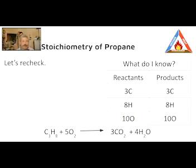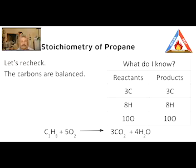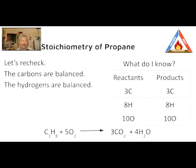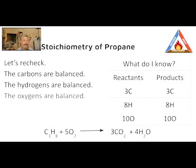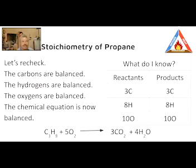Now let's just recheck our work. I have three carbons in propane on the reactant side. I have three carbon dioxide molecules, each containing one carbon, so I have three carbons on the product side — carbon atoms are balanced. On the reactant side I have eight hydrogen atoms from propane. I have two hydrogen atoms for every molecule of water, and there are four molecules of water, giving me eight hydrogen atoms on the product side — hydrogen atoms are balanced. There are five oxygen molecules on the reactant side, each containing two atoms of oxygen, for a total of ten. I have six total oxygen atoms in the three carbon dioxide molecules, each containing two. And I have four water molecules, each containing one oxygen atom, for a total of ten oxygen atoms. My oxygen atoms are now in balance. The chemical equation is now fully balanced.